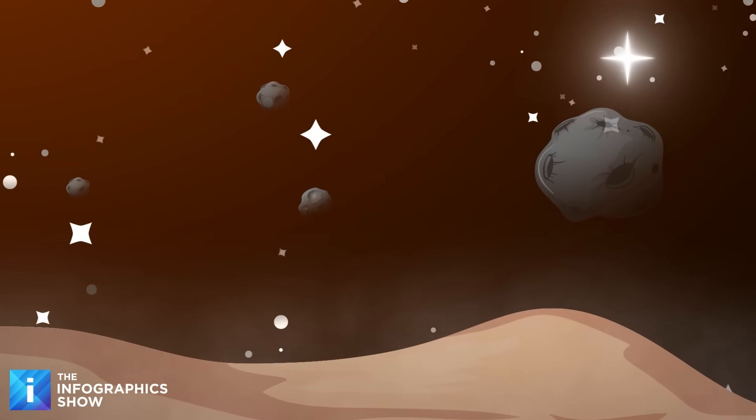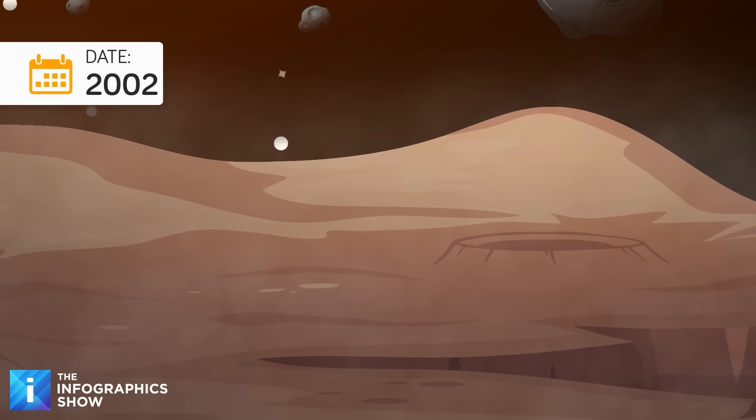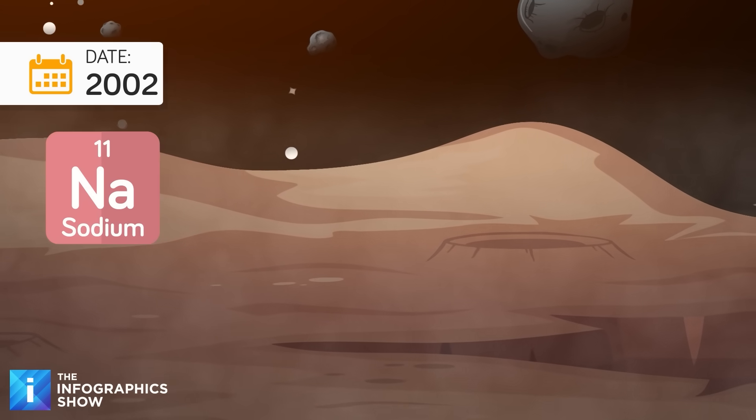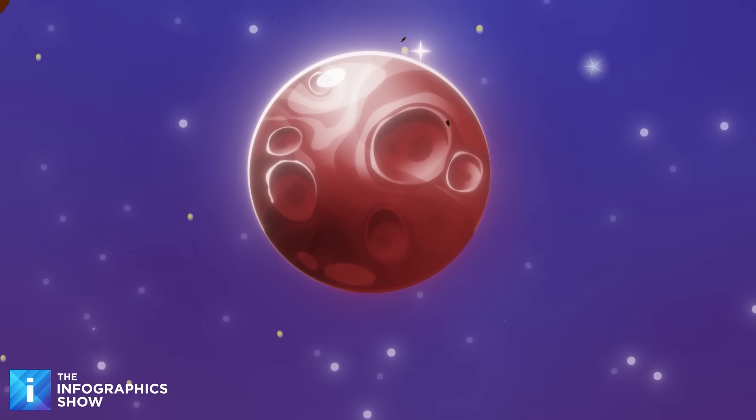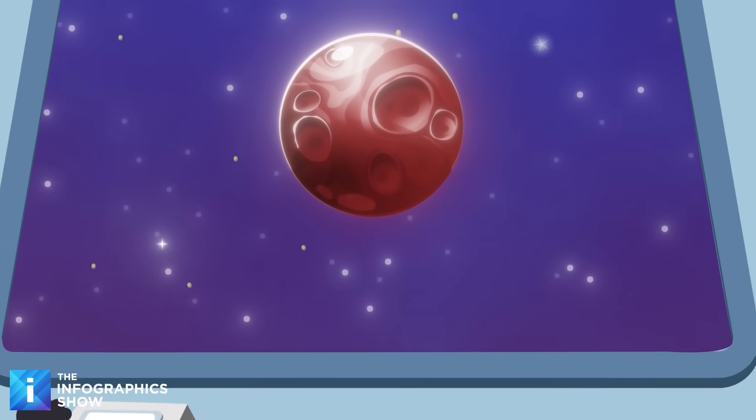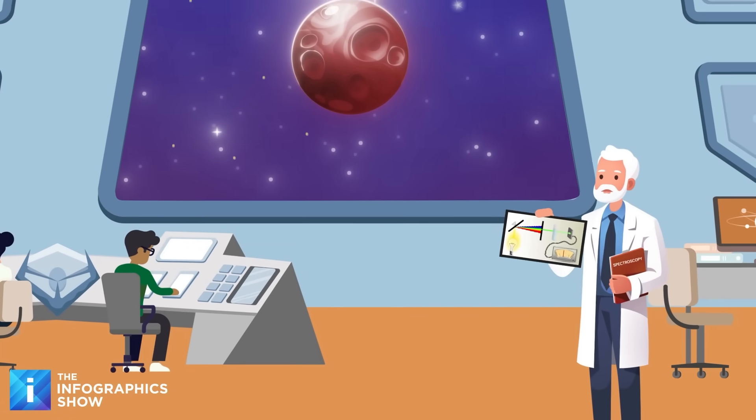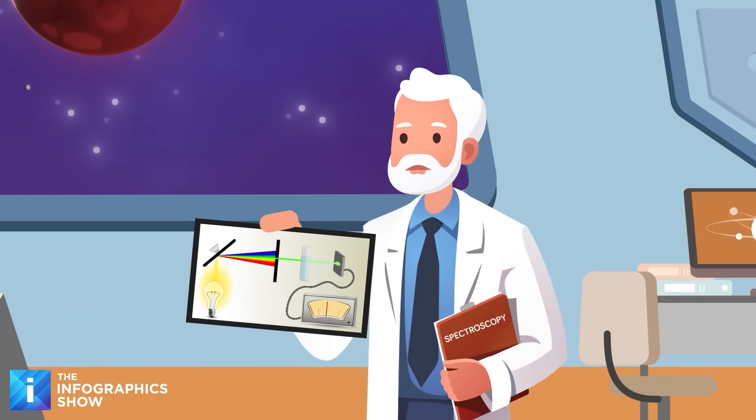The first spectrum analysis of an exoplanet using the Hubble Space Telescope was published in 2002, showing evidence for vaporized sodium in the atmosphere of an exoplanet called HD-209458b. This technology is now being focused on looking for potential biosignatures of life on exoplanets, with the discovery of DMS and DMDS on K2-18b being the first example of a successful attempt.